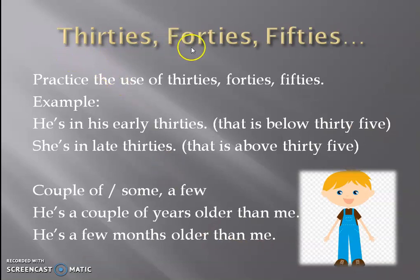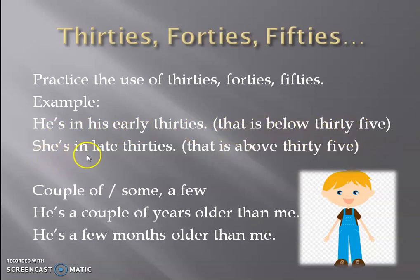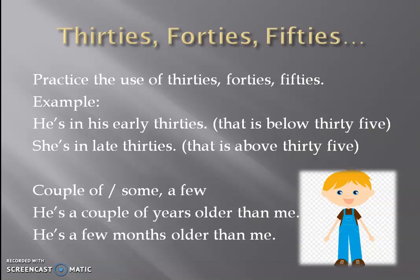Make a note of these words: 30s, 40s, 50s — and it can go further to 60s and 70s. Practice the use of these words. For example, 'He is in his early 30s' means he is below 35. 'She is in her late 30s' means she is above 35 years of age — that means she is not yet 40; it is between 35 and 39.